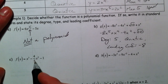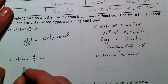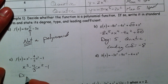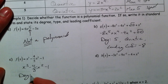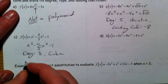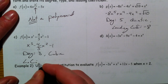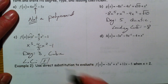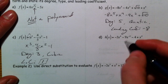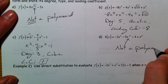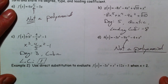The next one: we're allowed to have fractions as numbers out in front, so this is good. It's already in standard form. The degree is 3, making it a cubic. The leading coefficient — we'll call it LC — is 1, because there's a 1 out front. And the next one: because this has a negative 2 exponent, this is not a polynomial.